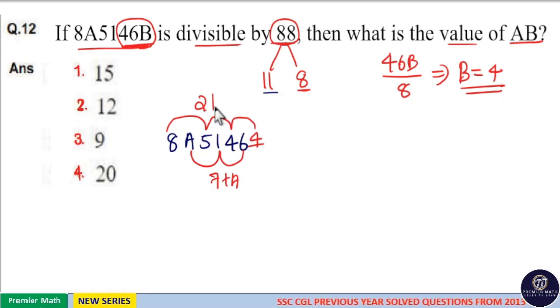Now, take the difference between odd place sum and even place sum. It should be 0 or 11. That is, 21 minus 7 plus A.